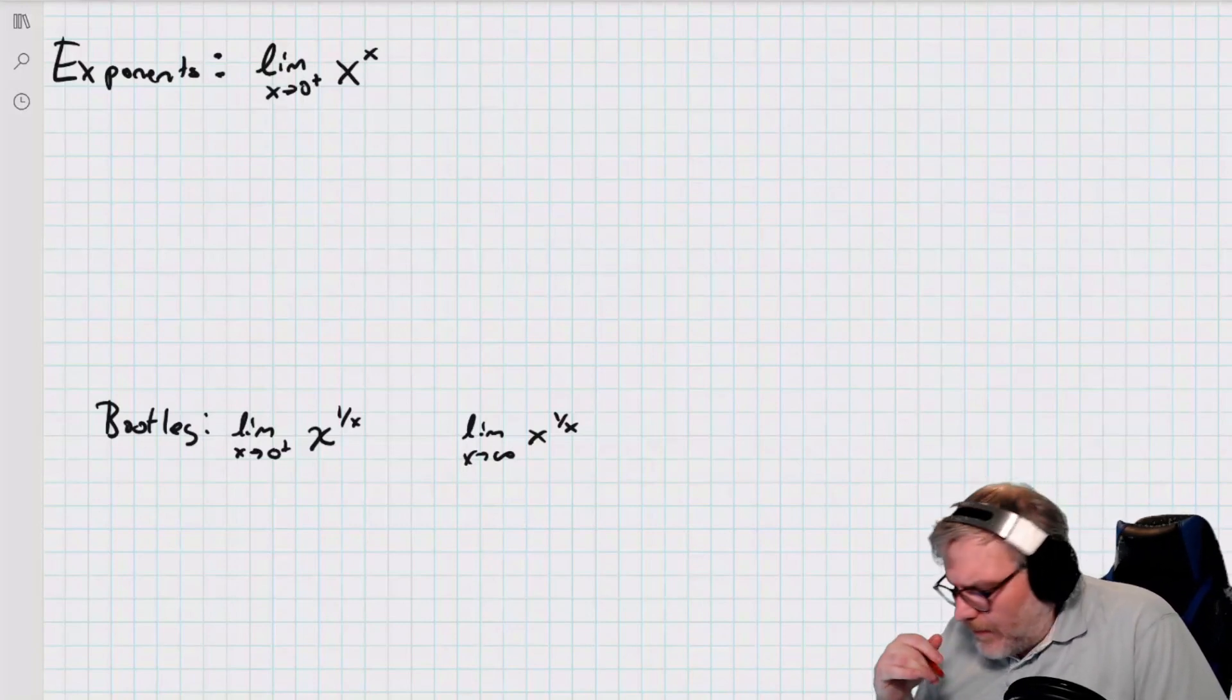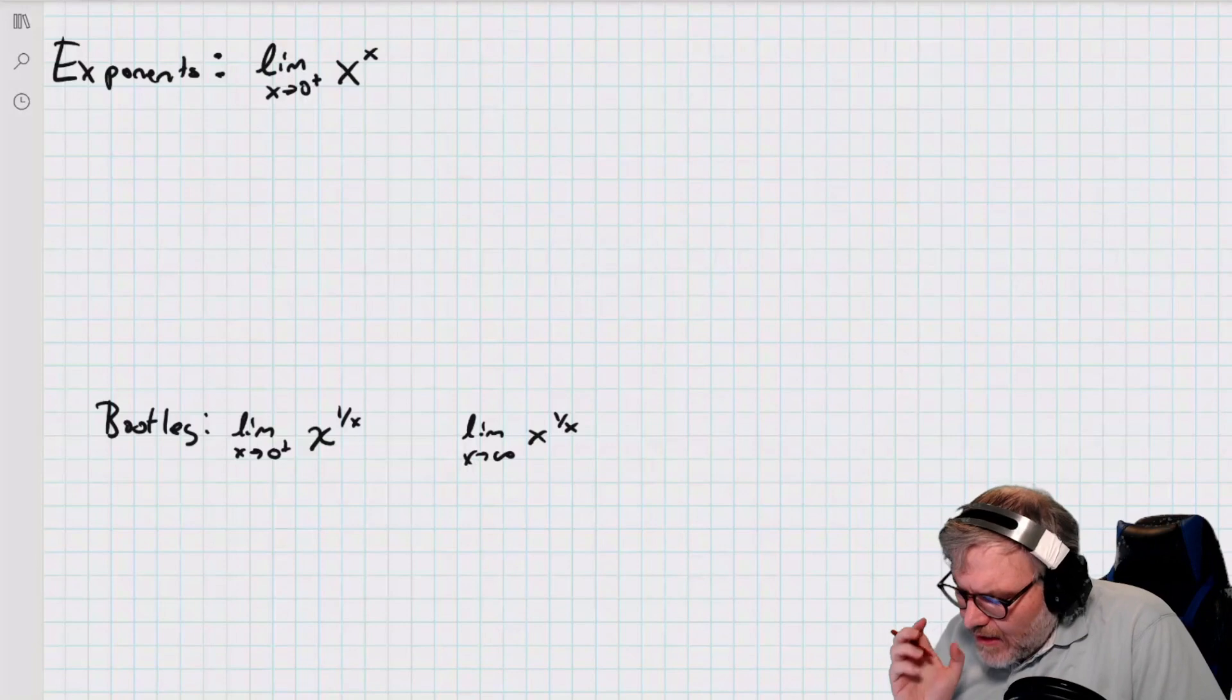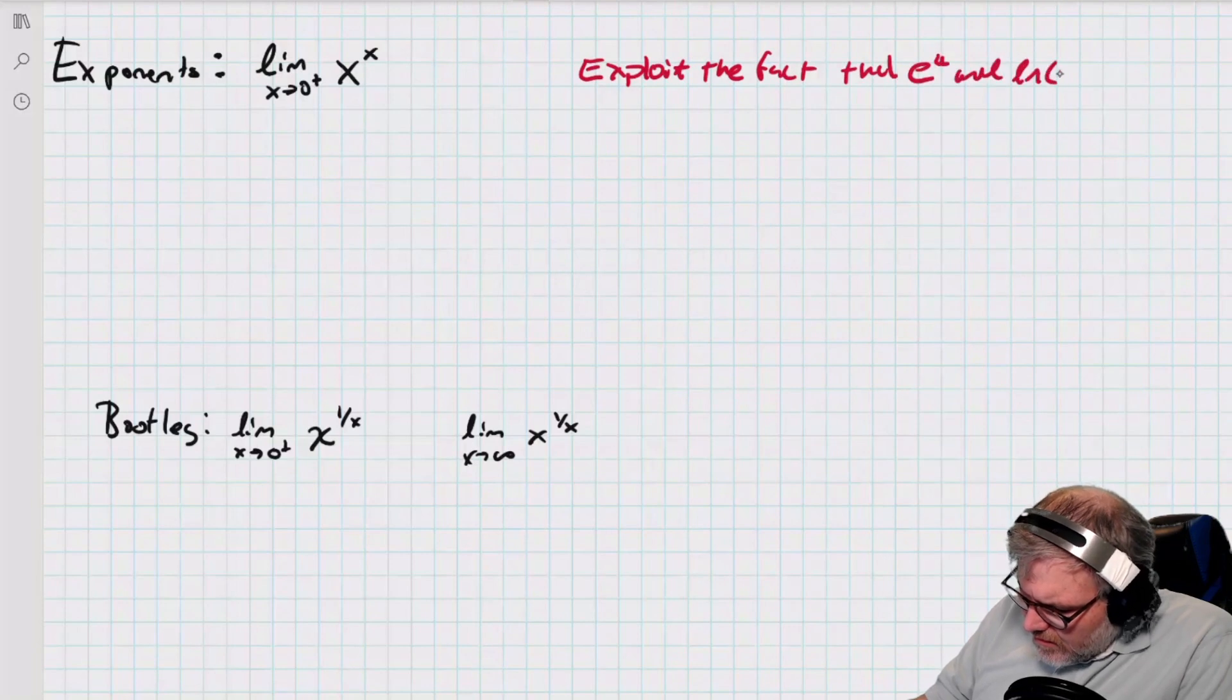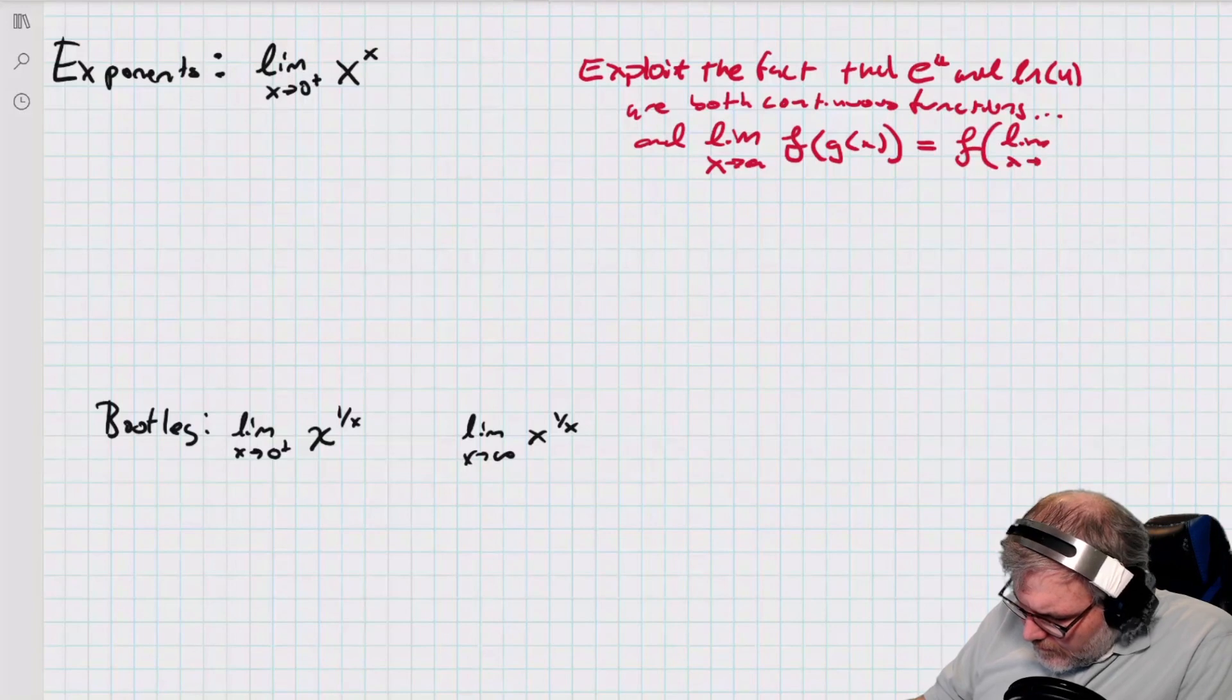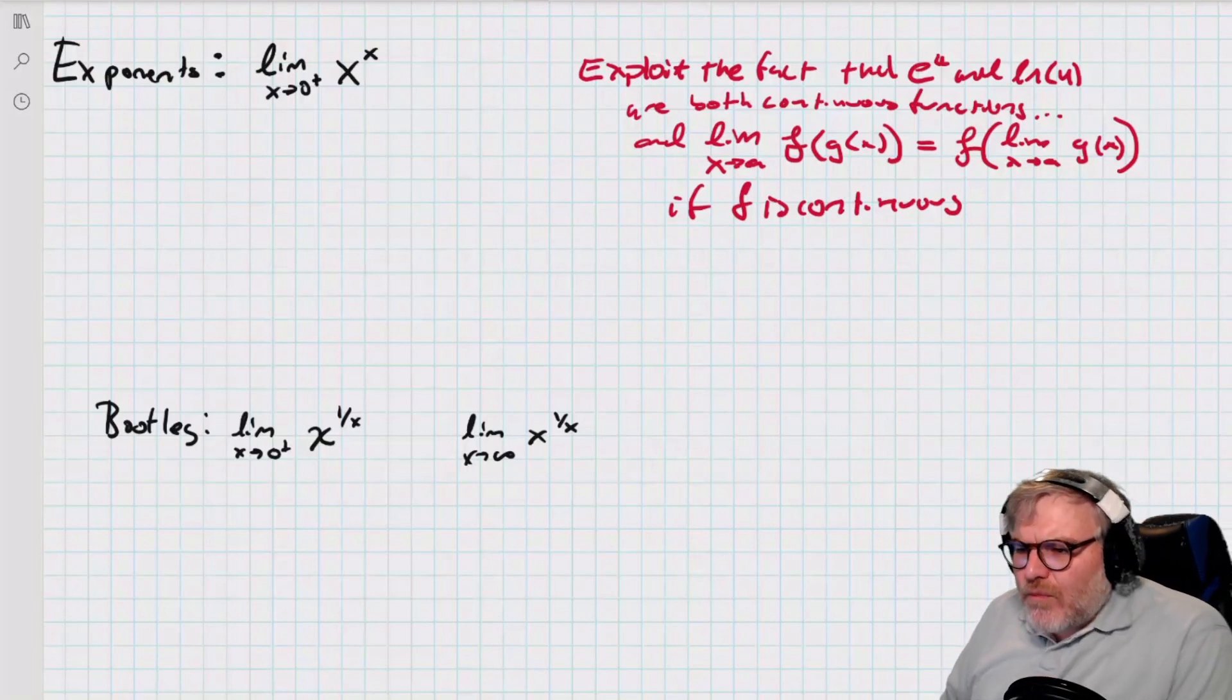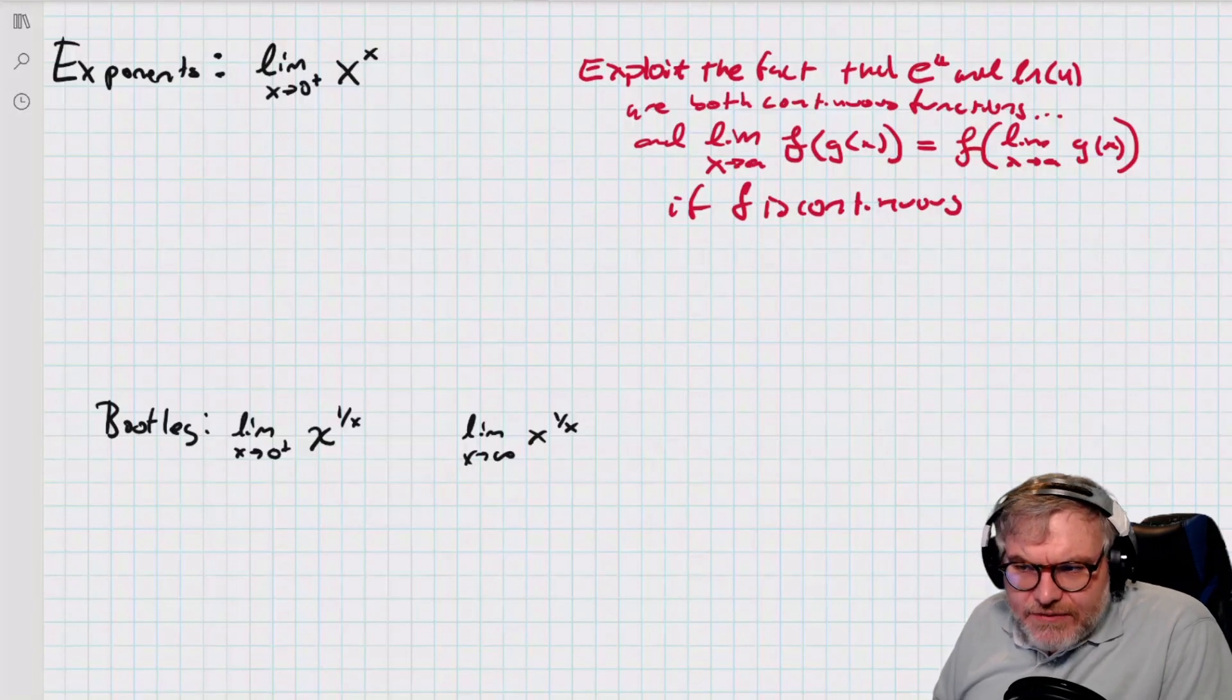Okay, let's look at one. These are the exponent problems. And these are a little trickier. What I'm going to do is I'm going to exploit something. I'm going to exploit the fact. So, if f is continuous, I can actually move f across the limit side. And e to the u and ln of u are both continuous functions where they're defined.